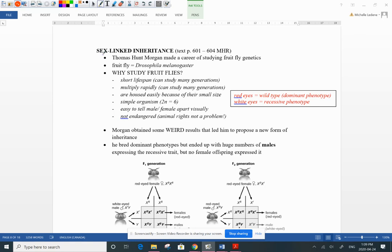There's actually a lot of really good reasons for doing that. They're easy to house, very small, have a short lifespan, and multiply very rapidly with many generations in a short amount of time. They're easy to tell male and female apart, and they're very simple. They only have three chromosomes. Their diploid number is six.